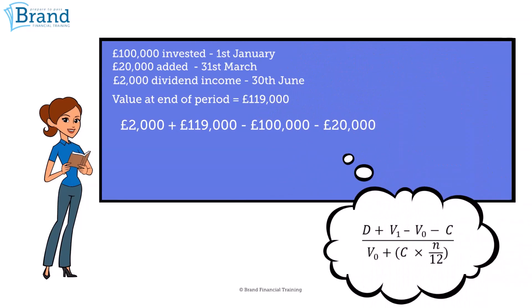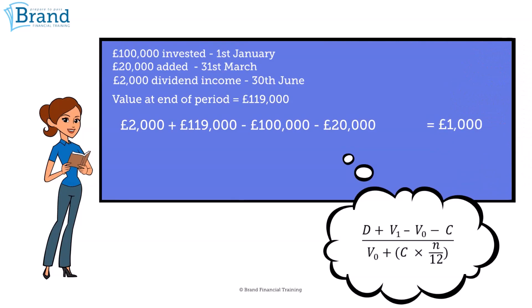If we plug these figures into the formula, we can see that the top line reads: two thousand pounds — the dividend income — plus a hundred and nineteen thousand pounds — the value at the end of the year — less a hundred thousand pounds — the value at the start of the year — less twenty thousand pounds, which was the money invested at the end of March. Remember, we deduct money introduced during the year in the top line. This gives us a top line of one thousand pounds.